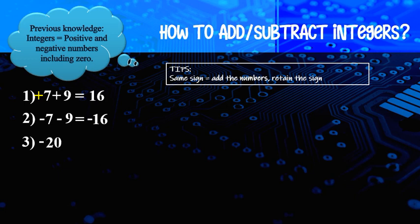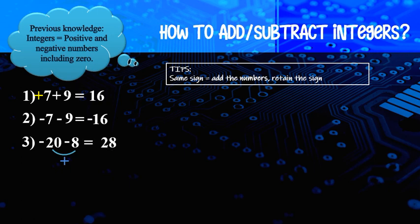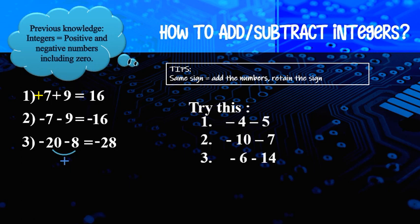Next example: negative 20 minus 8. Same case — look at the sign, both negative. Same sign, so we plus the number: 20 plus 8 equal to 28. Is it positive or negative? Both negative, so retain the sign — the answer is negative 28. You can try to do this in your exercise book.